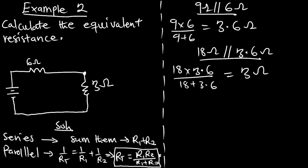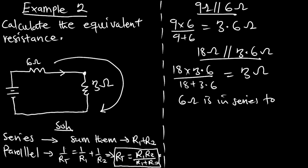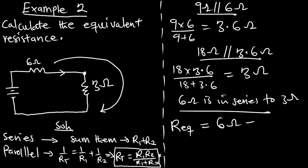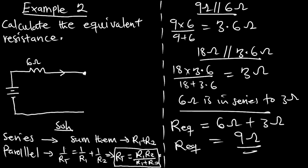We now only have two resistors left. The same current flows through both, so they are in series. The 6-ohm resistor is in series with the 3-ohm resistor, giving an equivalent resistance of 6 + 3 = 9 ohms. The entire original circuit has been reduced to a single 9-ohm equivalent resistance.